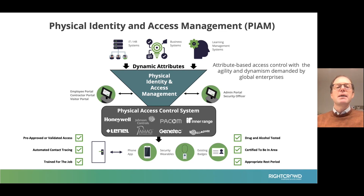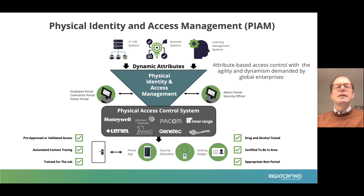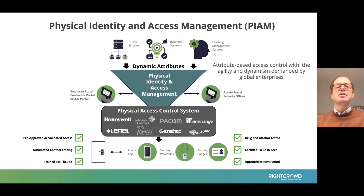So if a new person starts next Monday, the PIAM system will receive that information from — in this example it could be Workday, an HR system. It receives that information, it will automatically create a record for that person in the physical access control system, and assign the correct rights.